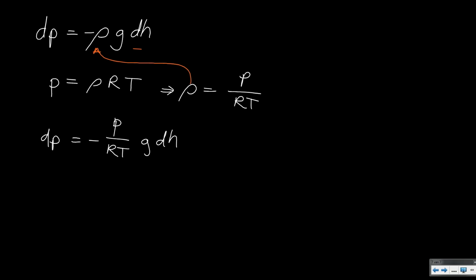The next step is to get all the pressure terms on the left side of the equation. We divide both sides by pressure, which gives us 1 divided by p times dp on the left, and minus g over RT times dh on the right.